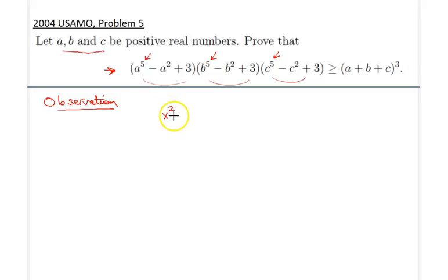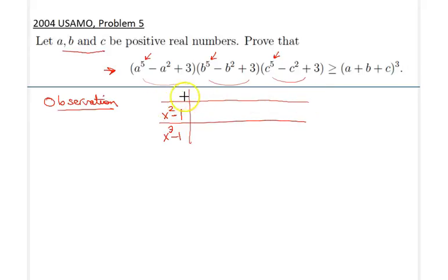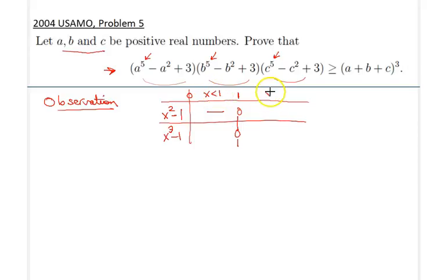Observe the sign of (x²-1) and (x³-1) for x greater than zero. Both of these expressions have roots at one. So when x is strictly less than one, (x²-1) is negative, and (x³-1) is also negative. When x is greater than one, both are positive. When x equals one, both are zero.